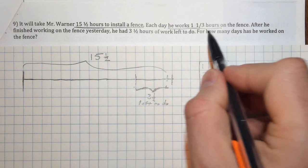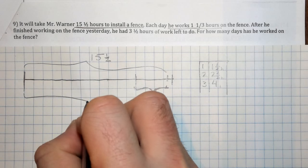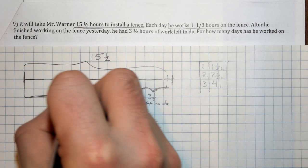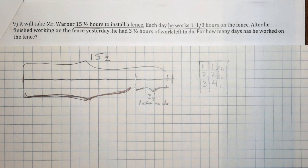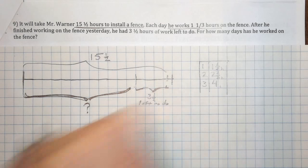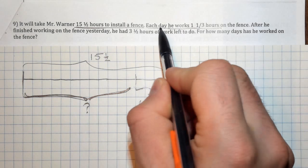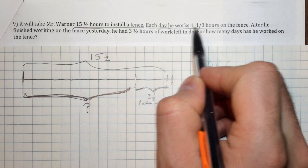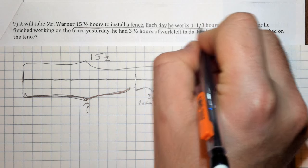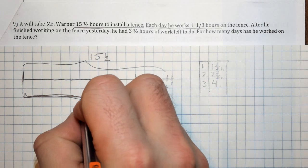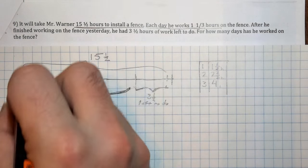Okay, so the question is, for how many days has he worked on the fence? So that means the question is, how many days has it taken him to do this much? How many days? That is the question. So we know if it's one and one third hours each day, so we want to know how many days has he worked on this? So how many times can one and one third fit into this amount? We want to know how many times can one and one third go into this portion or fit into this portion.